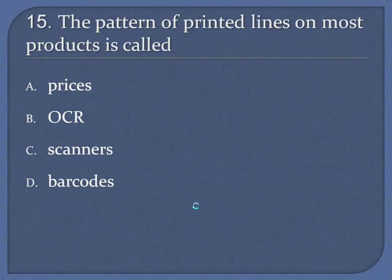Question 15: The pattern of printed lines on most products is called. A. Prices. B. OCR. C. Scanners. D. Barcodes. Answer: Barcodes.